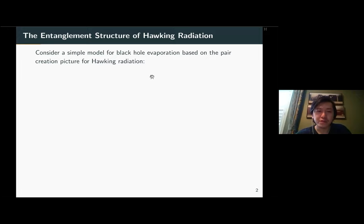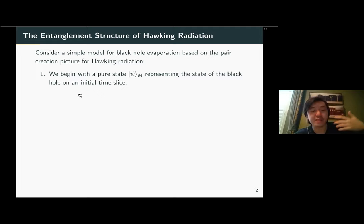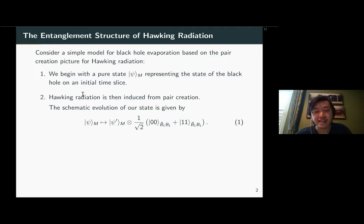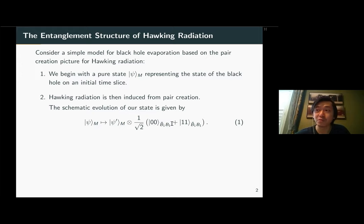A very simple model for black hole evaporation is based on the heuristic pair creation picture for Hawking radiation. We begin with some pure state representing the state of the black hole just after formation, and we model time evolution through an induced pair creation process. The evolution modifies the matter state slightly, but what's important is that we model the escape of Hawking radiation through pending EPR pairs. At every time step we have some outgoing mode labeled b, maximally entangled with a partner mode labeled b̃.